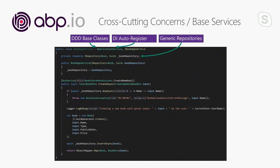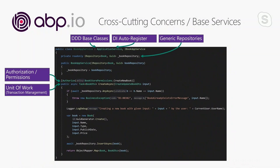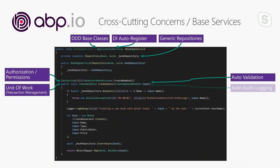You can use generic repositories to work with the database. The declarative Authorize attribute can be used to check permissions — it's completely integrated into ASP.NET Core's authorization system and extends it. The unit of work system automatically creates and manages the database connection and transaction for you. It rolls back if your method throws an exception; otherwise, it saves all changes to the database as a single transaction. It automatically validates the input and throws an exception if it is invalid, so you can safely work with valid input inside your method. It automatically creates and saves audit logs for each method call, so you can get a detailed report of which user called which method.